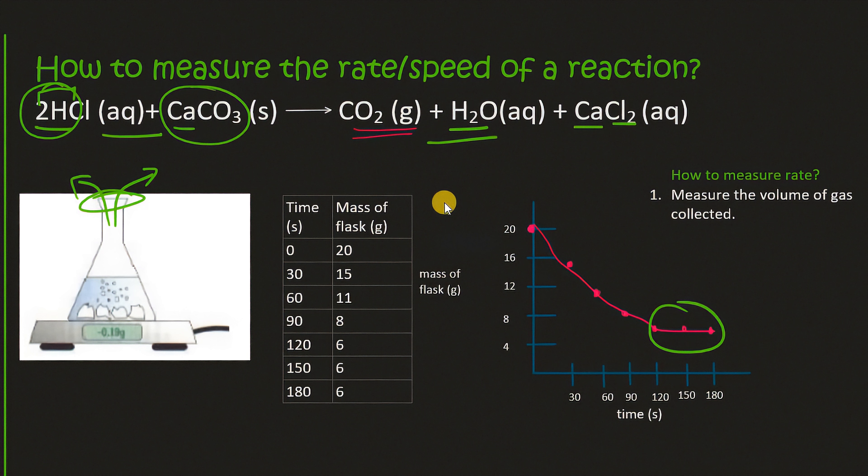And then we can also see that the gradient is steepest at the beginning and then becomes more gradual as the reaction proceeds. And that is an indication of the rate of the reaction. So the rate of the reaction is fastest in the beginning and that's due to the collision theory which says that we need collisions to take place.